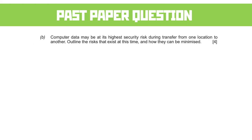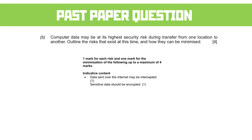Part B: computer data may be at its highest security risk during transfer from one location to another. Outline the risks and how they can be minimised — one mark per risk, one mark per minimisation, up to a maximum of four. Data might be intercepted. Data is passed from node to node across the internet, and if one of those nodes is a bad actor trying to read your data, they can. Therefore, sensitive data should be encrypted when sent over the internet.